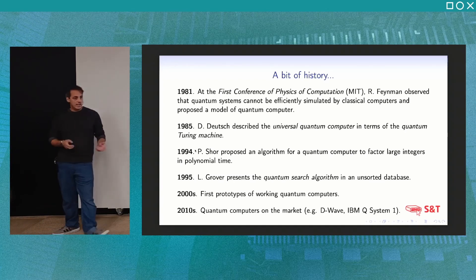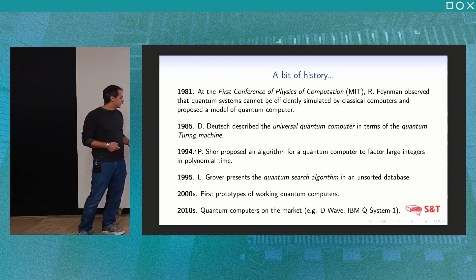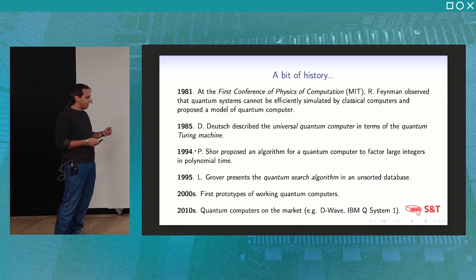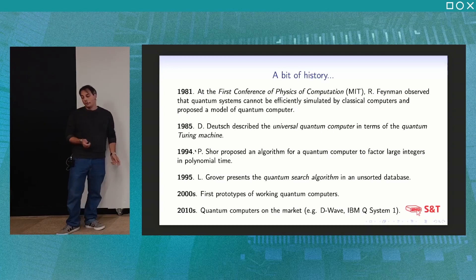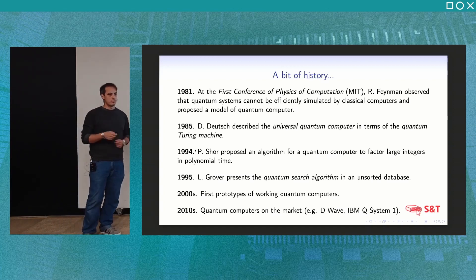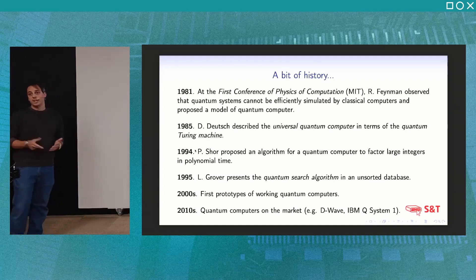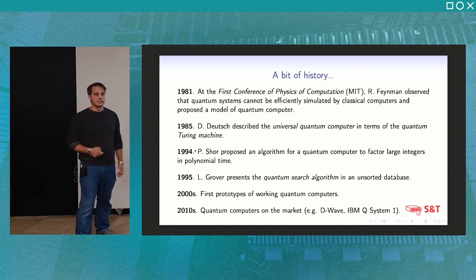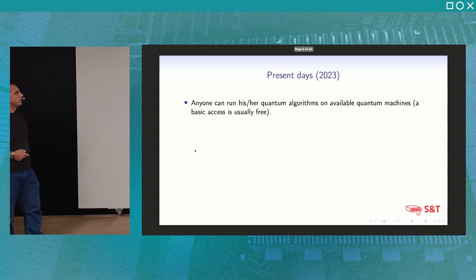In the last 20 years or so, we have seen the first prototypes of quantum computers. Since roughly 2010, we have quantum computers on the market — for example, D-Wave and IBM Q System 1. Are we able to solve hard problems with quantum computers that are intractable with classical machines? Not yet. But the point is to study and push forward the knowledge frontier of quantum computing.